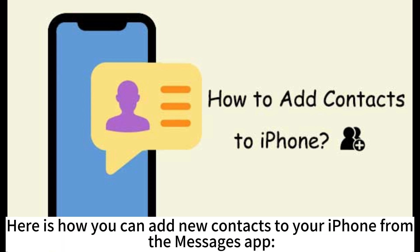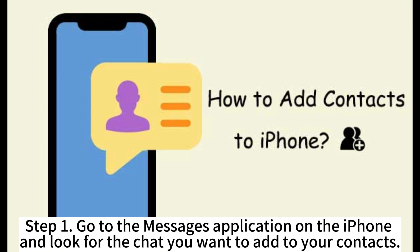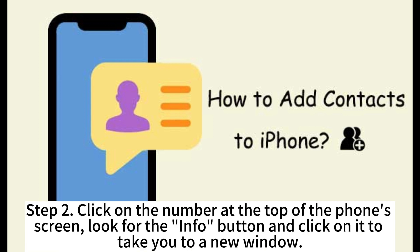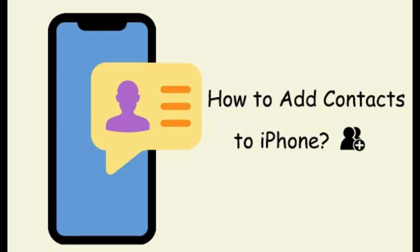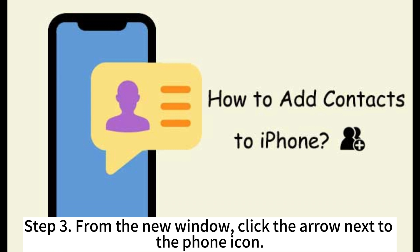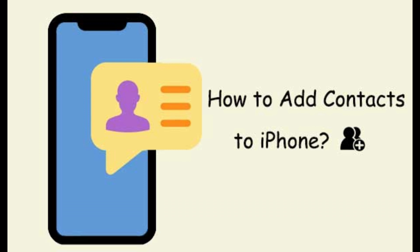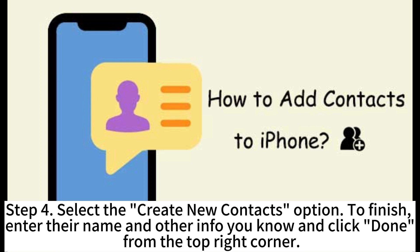Here is how you can add new contacts to your iPhone from the Messages app. Step 1: Go to the Messages application on the iPhone and look for the chat you want to add to your contacts. Step 2: Click on the number at the top of the phone's screen, look for the info button and click on it to take you to a new window. Step 3: From the new window, click the arrow next to the phone icon. Step 4: Select the 'Create new contact' option. To finish, enter their name and other info you know and click Done from the top right corner.